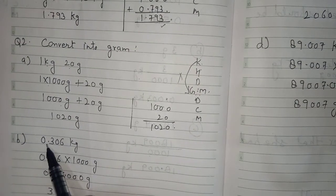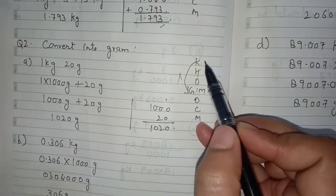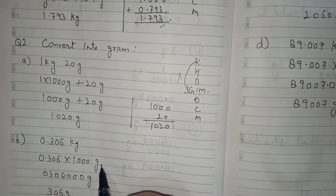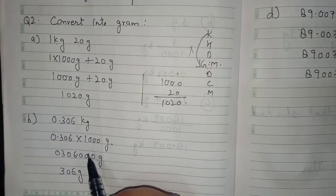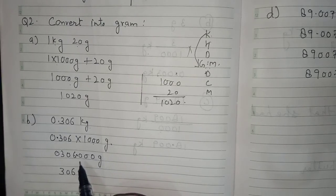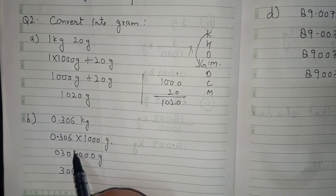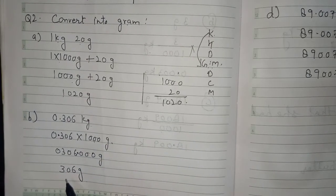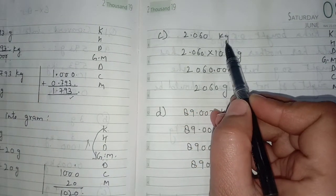Part b: 0.306 kg. Since 1 kg equals 1000 grams, we multiply 0.306 by 1000. In the question there are three digits after the decimal, so in the answer there should also be three digits after the decimal. After the decimal we have only zeros, so the answer is 306 grams.